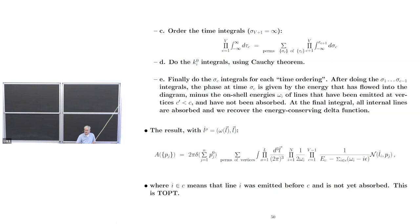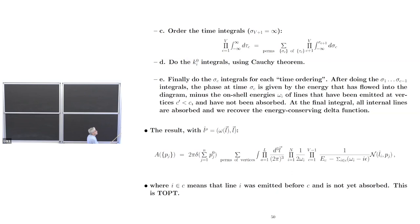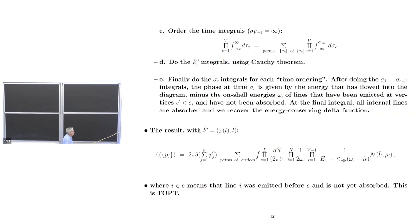Consider the example of just the self-energy type diagram: either one vertex is first or it's second — those are the only two possibilities. You go to n factorial for an n-vertex graph. Once you have this, you can do all the energy integrals using Cauchy's theorem. The time integrals are all defined by phases, and the i-epsilons in the propagator denominators become convergence factors making the integrals finite as they go to minus infinity. All the i-epsilons in the phases cancel in the last integral, recovering the energy-conserving delta function.